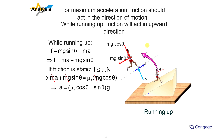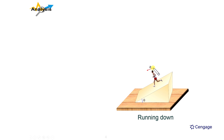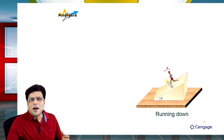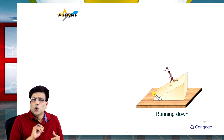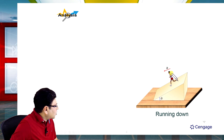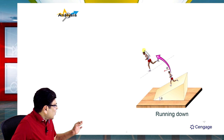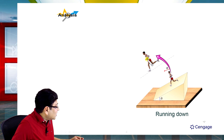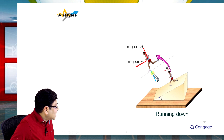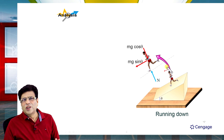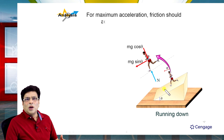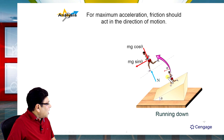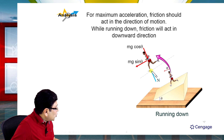Now let us consider the case when he is running in the downward direction down the inclined plane. Suppose acceleration is a. Here also we need to calculate maximum acceleration. For maximum acceleration, friction should act in the downward direction. We draw the free body diagram with weight components: mg sin θ down the incline, mg cos θ perpendicular to the incline, and normal reaction N. Friction acts downward as small f.